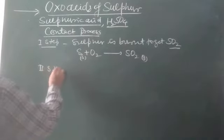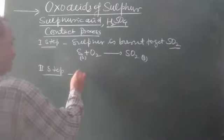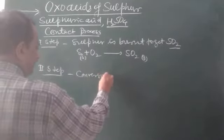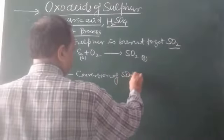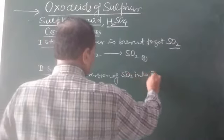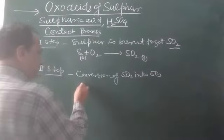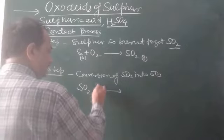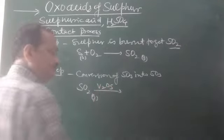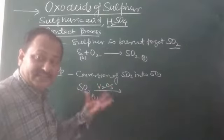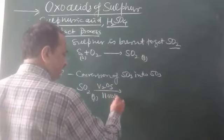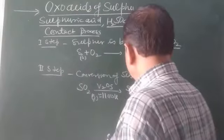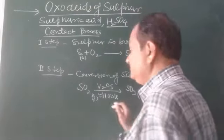In the second step, SO₂ is converted into SO₃. The SO₂ gas undergoes catalytic oxidation in the presence of V₂O₅ at a very high temperature of around 450°C, and it is converted to SO₃ gas.